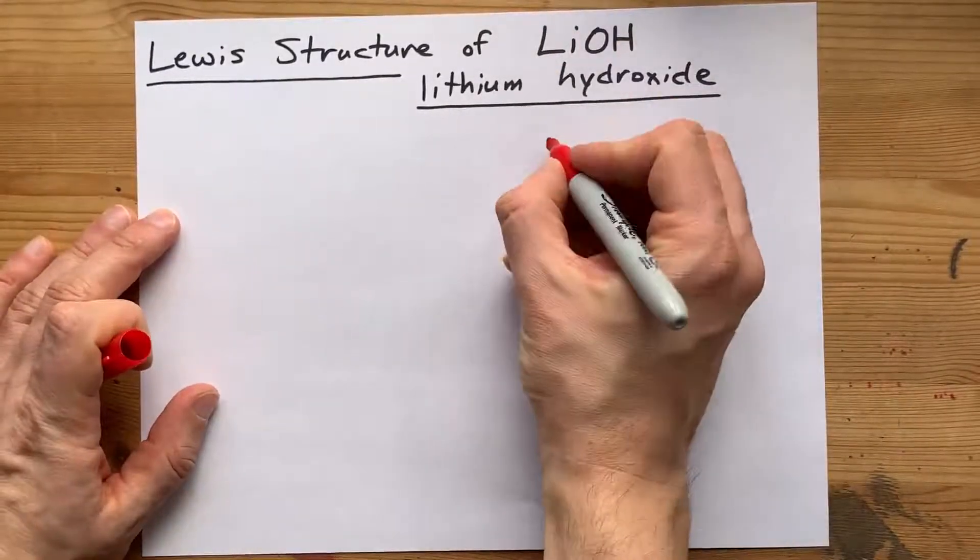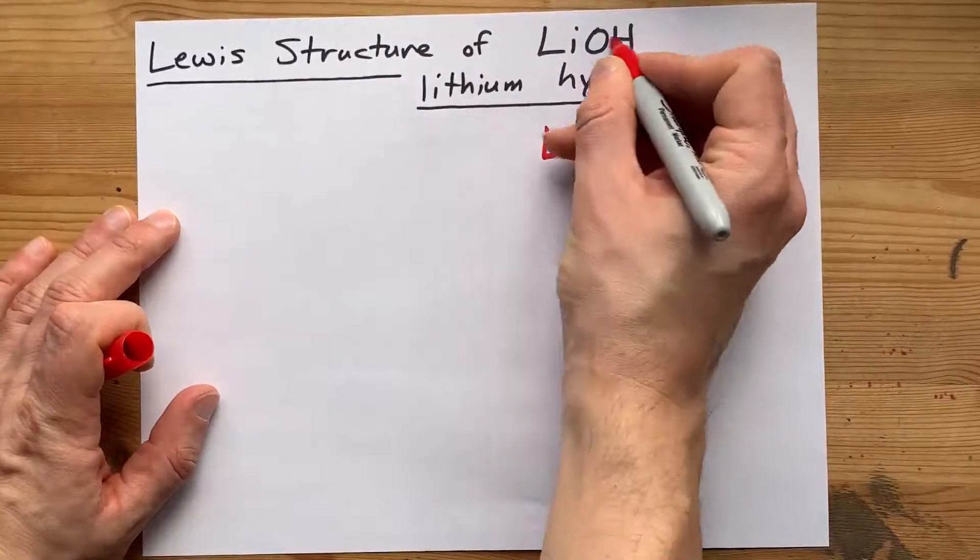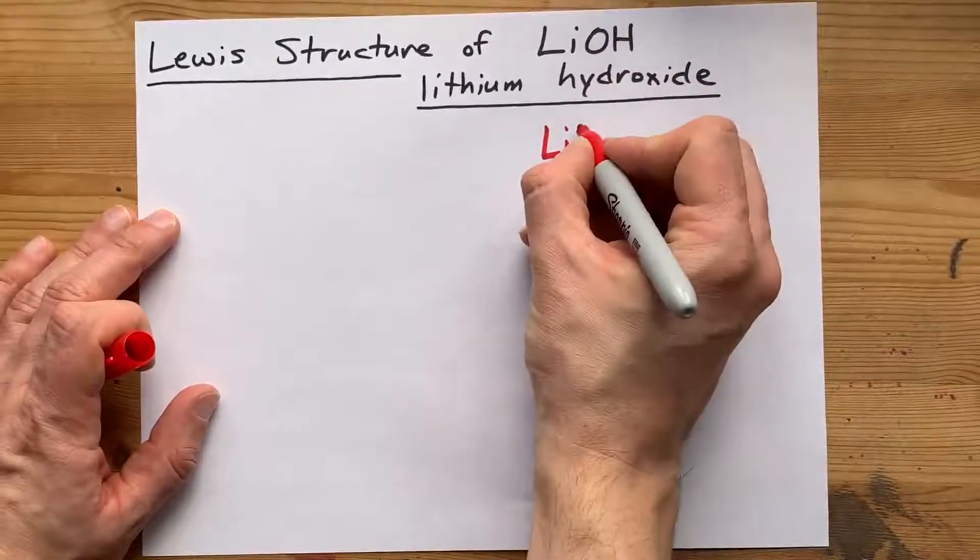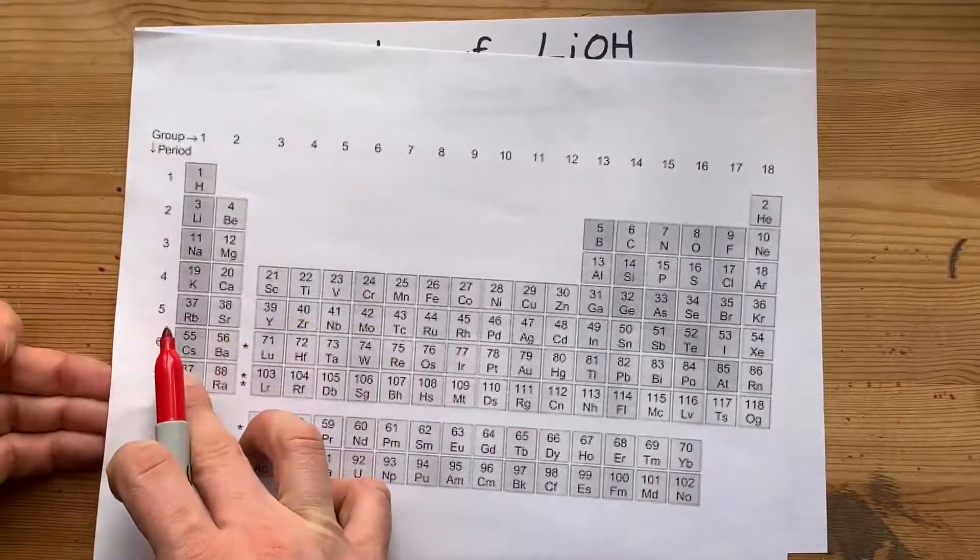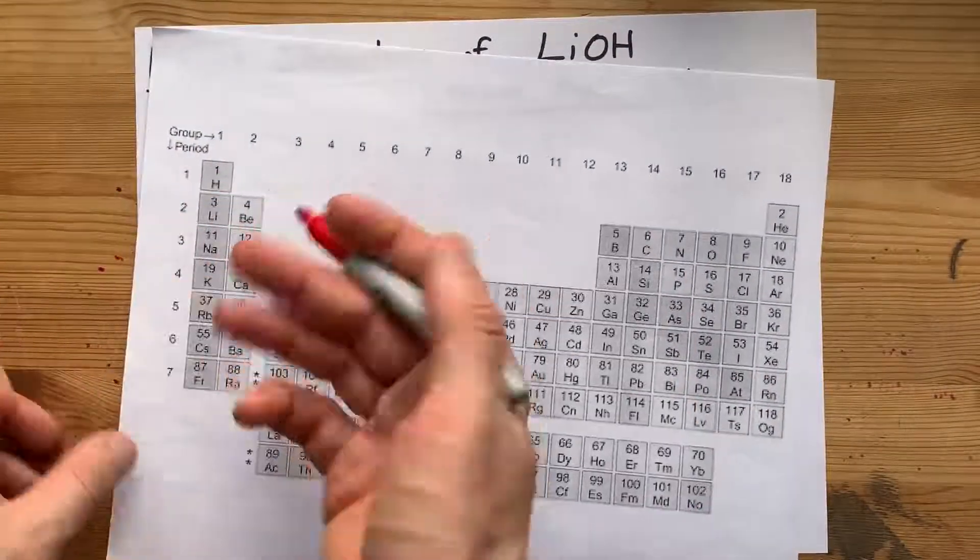I know it's ionic because lithium is a metal and the other things are non-metals. Lithium wants a charge of plus one. I know that because it's in the first column, and now you know that because it's in the first column.